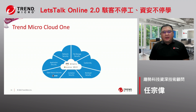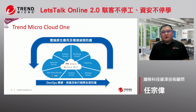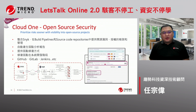在Trend Micro Cloud One这边，我们针对云端产品云端环境设计出一些产品。在DevOps上面，第一个跟各位介绍的就是Cloud One Open Source Security。Open Source Security的部分，它可以去整合Snyk，也可以整合你们的Git环境，包含像GitHub、GitLab、Jenkins都可以。也就是说我们可以在你的coding阶段就去扫描你的code里面所应用的一些东西，是不是有安全性上的威胁。